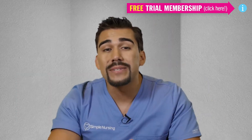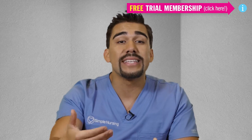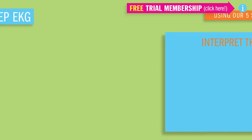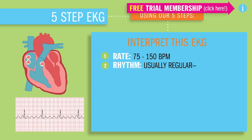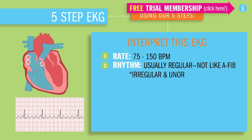So using our five steps, let's interpret this EKG. Step one, the rate will be between 75 to 150 beats per minute. Step two, the rhythm is usually regular and evenly spaced out between our R peaks — which is not like a-fib, which is irregular and unorganized.